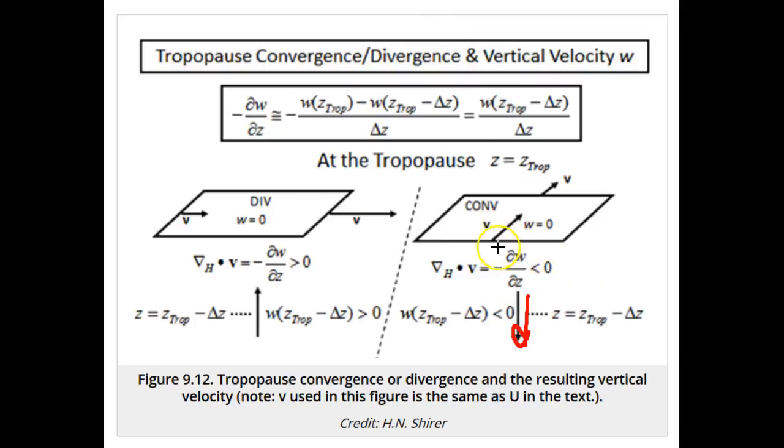If we look at the changes in w with respect to height above the level of non-divergence, as z increases, w goes from more negative to less negative, which is a positive change in w with a positive change in z. So the partial derivative is positive even though w is negative.